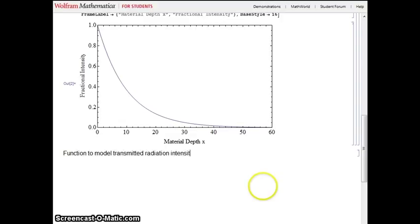Let's make a function to model the transmitted radiation intensity in 3D. In this module, I defined i, i0, and lambda to be local variables.